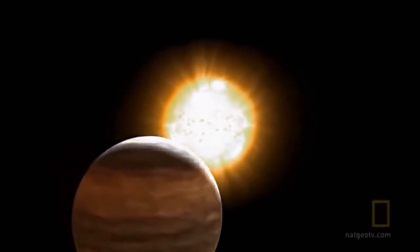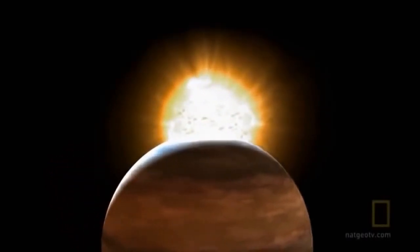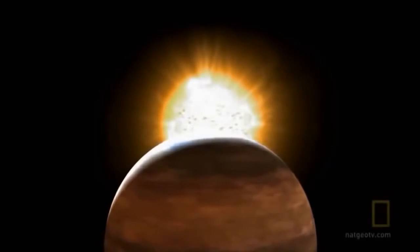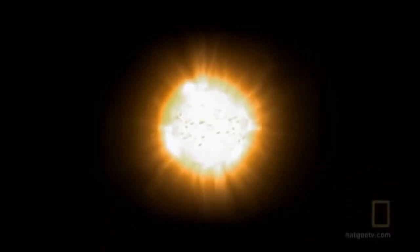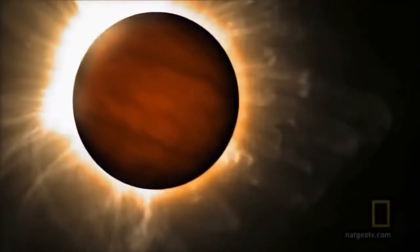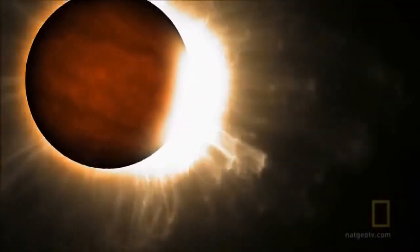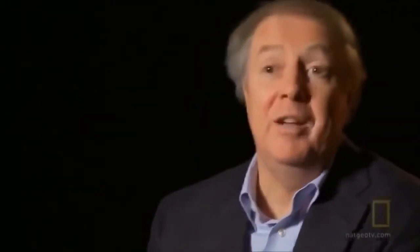Hot Jupiters are tidally locked. They present the same face to the star at all times, just like the moon does to Earth. It's going to be permanent daylight on one side and permanent nighttime on the back. If I were stuck on a hot Jupiter, I'd want to be on the back side and hope that some of the heat from the front side would make its way around the back.